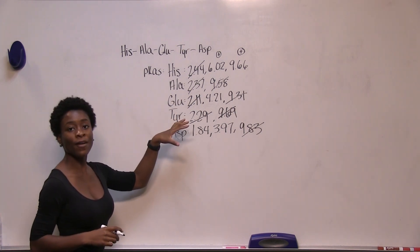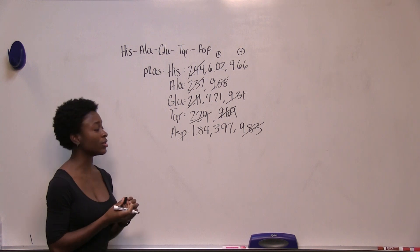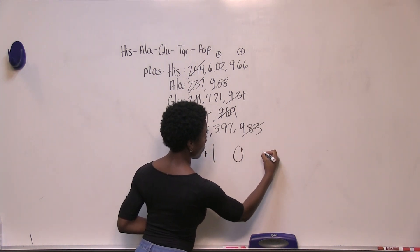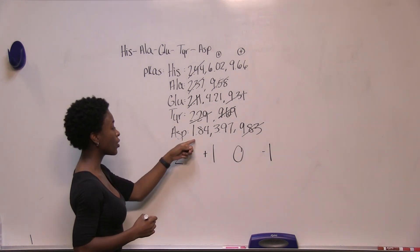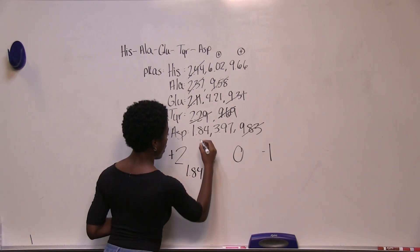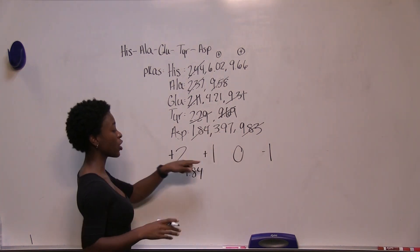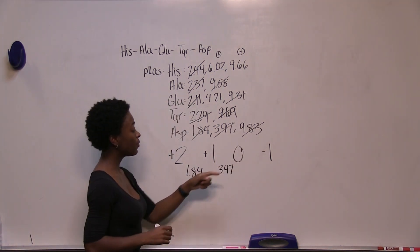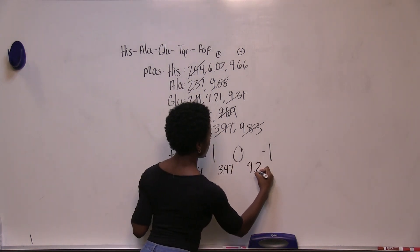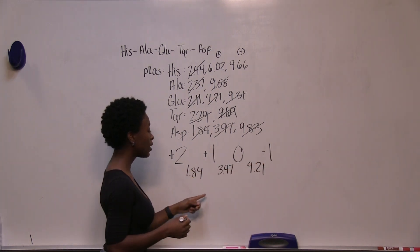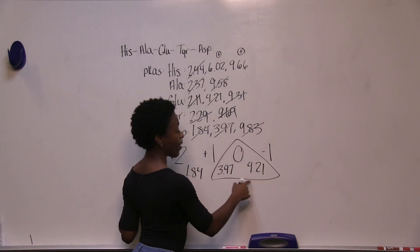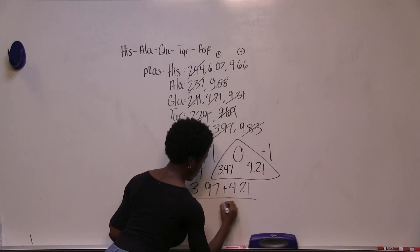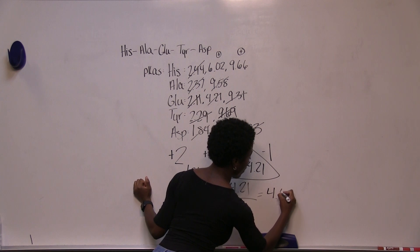Now we have all unnecessary pKa values crossed out, with an overall charge of plus two. Writing out the charges: plus two, plus one, zero, negative one. Our lowest pKa is 1.84 — when that carboxyl group is deprotonated we're at a charge of plus one. Next highest is 3.97, now at a charge of zero. Next highest is 4.21 from glutamate, now at a charge of negative one. Taking pKa values directly before and after zero and averaging them: 3.97 plus 4.21 divided by 2 gives us 4.09. That is our isoelectric point.